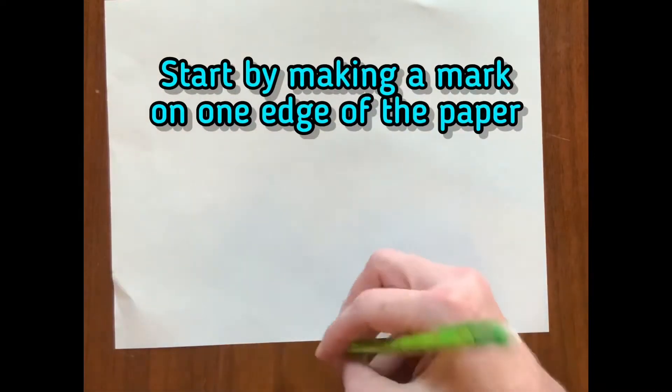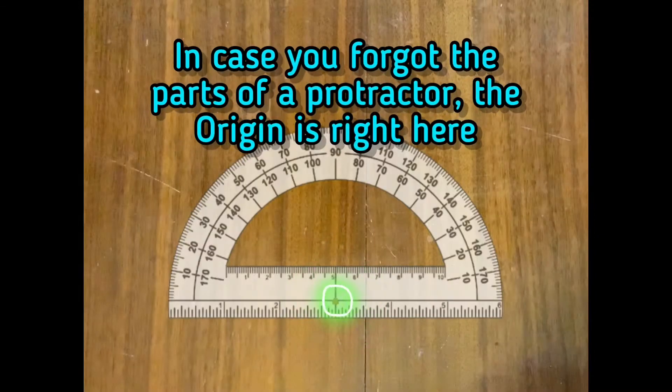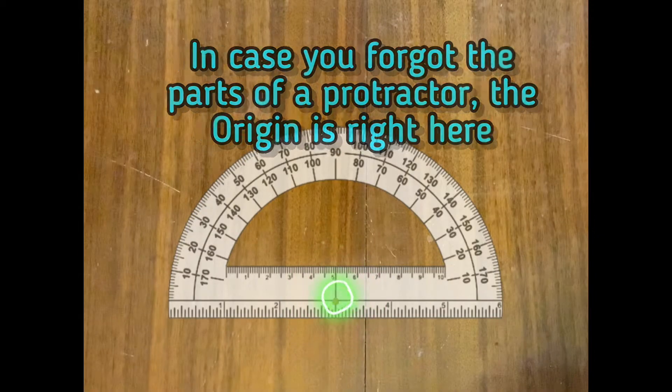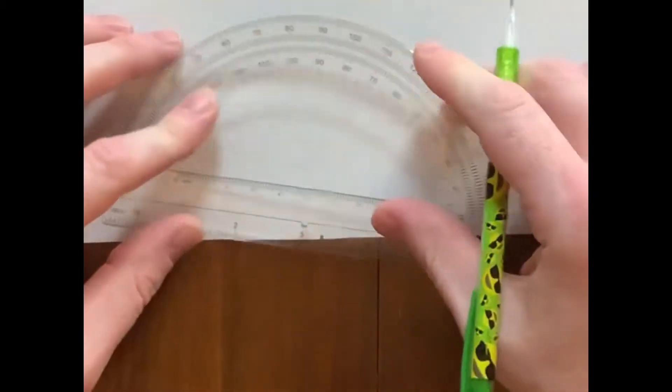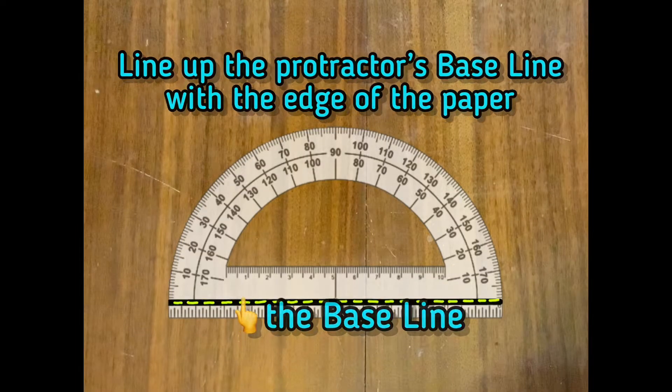Start by making a mark on one edge of the paper. This will be the origin point for the protractor. In case you forgot the parts of the protractor, the origin is right here. Line up the protractor's base line with the edge of the paper.